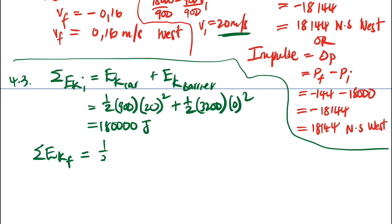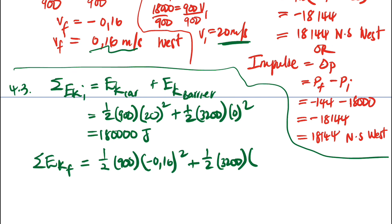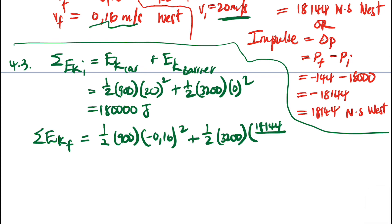Now calculate the total kinetic energy after the collision. For the car: one-half times 900 times (0.16) squared. For the barrier: its mass is 3200 and its final velocity is found from its final momentum of 18,144 divided by 3200. We then square that velocity. There is no need to include the negative sign for the car's velocity since it will be squared.